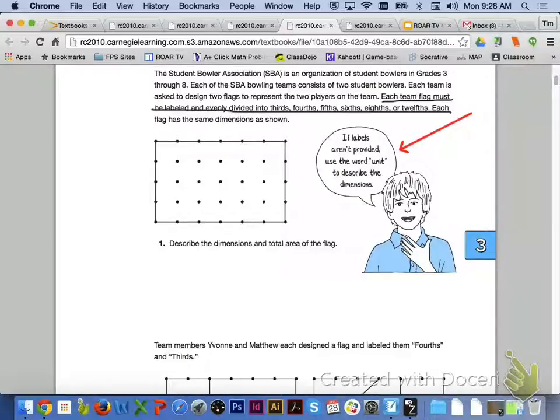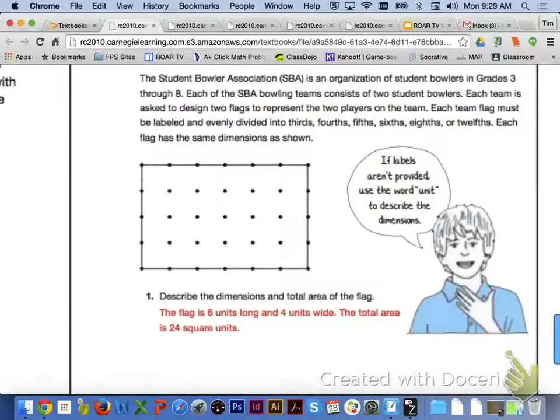Each flag has the same dimensions as shown. Before we get started with number one, please remember that if labels are not provided, use the word unit to describe the dimensions. So, to get started, take a look at number one. What I want you to do is describe the dimensions and give the total area of the flag. The flag is going to be 6 units long and the flag is going to be 4 units wide, to give us a total area of 24 square units. We get 24 by multiplying 6 times 4.